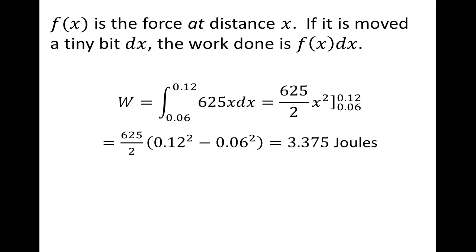625x is our function. We find the integral evaluated at both endpoints, getting 0.12 squared minus 0.06 squared, all multiplied by 625 over 2, which turns out to be 3.375 joules — that's the unit of work in the metric system.